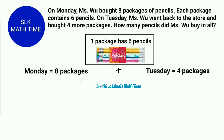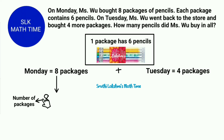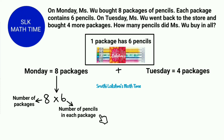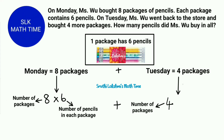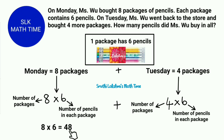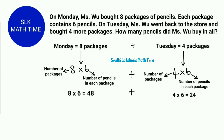So we have to see how many pencils she bought on Monday and Tuesday, then add them together. 8 is the number of packages she bought on Monday, and we multiply it by 6, which is the number of pencils in each package. Then on Tuesday she bought 4 packages, so we multiply 4 by 6. So 8 times 6 is 48, plus 4 times 6 is 24. When we add 48 plus 24, we get 72.